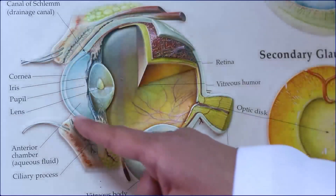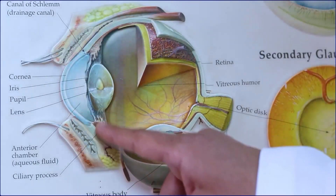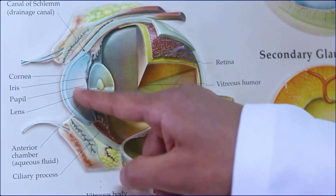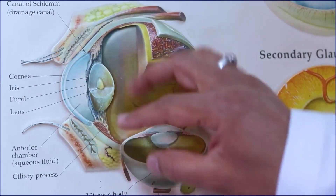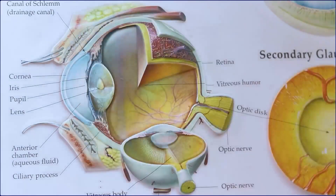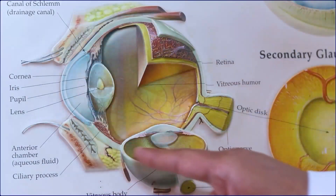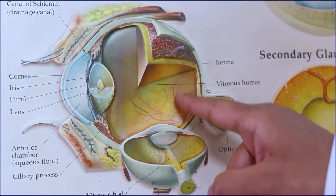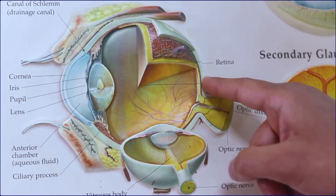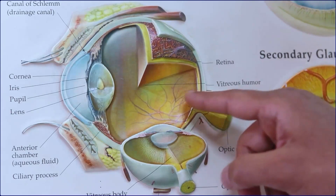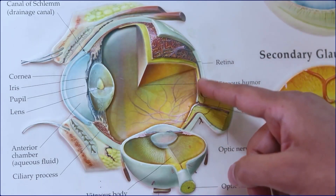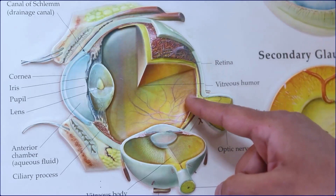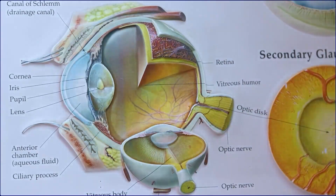Any obstruction to this structure called the trabecular meshwork will lead to blockage of the flow of the aqueous humor, leading to increase in the intraocular pressure. This increase in the intraocular pressure will put pressure on the main optic nerve, which is concerned with vision. When the pressure increases, there is slow degeneration of this optic nerve, leading to loss of vision — what we call glaucoma.